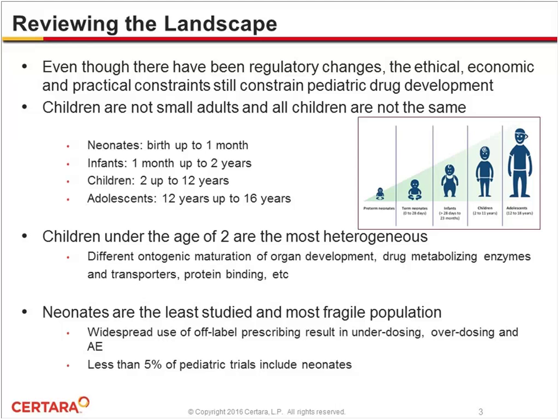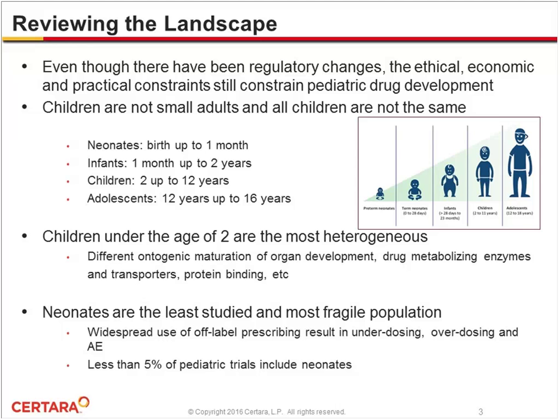In particular, the neonatal population is the least studied and most fragile. Within this neonatal population, there is in fact a one-log size difference in body weight, ranging from 0.5 to 5 kilograms between extremely low birth weight preterm infants and full-term infants. There is widespread use of off-label drug prescription in this population, which results in either underdosing, overdosing, and adverse drug effects. Less than 5% of pediatric trials include neonates.